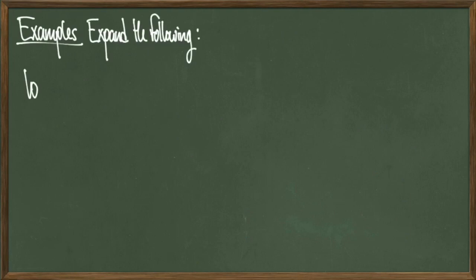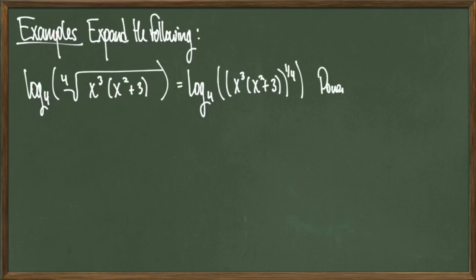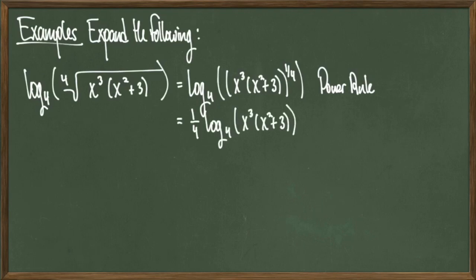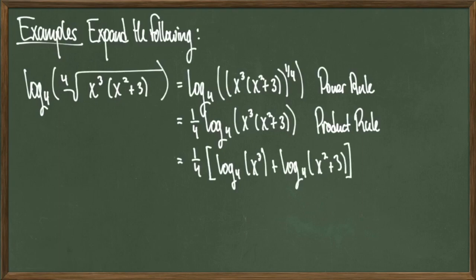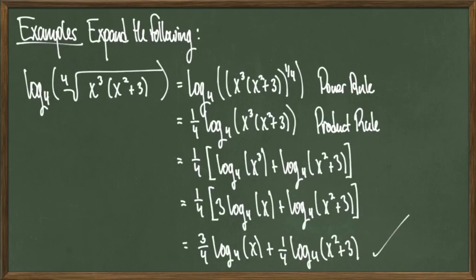For this next example, we'll expand log base 4 of the 4th root of quantity x cubed times x squared plus 3. First, I realize that this 4th root is actually raising this quantity to the power of 1/4, which will allow me to use the power rule by dropping the 1/4 down in front of the log to get 1/4 times log base 4 of quantity x cubed times quantity x squared plus 3. Using the product rule, this expands to 1/4 times the quantity log base 4 of x cubed plus log base 4 of x squared plus 3. Zooming in on log base 4 of x cubed, I can use the power rule within the parentheses to get 1/4 times the quantity 3 times log base 4 of x plus log base 4 of x squared plus 3. Now all I have to do is distribute the 1/4 to get a final answer of 3/4 log base 4 of x plus 1/4 log base 4 of x squared plus 3, and we're done.